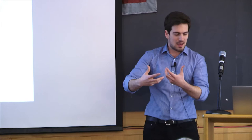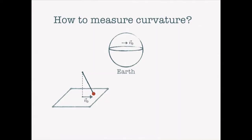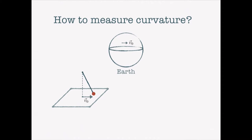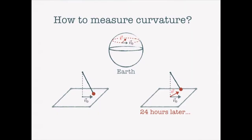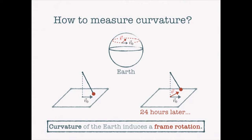The curvature of spacetime is precisely what is responsible for the phenomenon of gravitation according to Einstein's theory. To measure curvature generally, consider the Earth — a sphere. There's a nice operational way of doing so using an idea 200 years old: the Foucault pendulum. Set a pendulum in motion oscillating along a specific axis. As the Earth rotates, the pendulum is parallel-transported on a circle around the sphere. After 24 hours, you observe that the oscillation axis has precessed by a specific angle. This is a geometric phase, and the reason for this frame precession is the curvature of space.